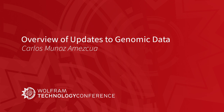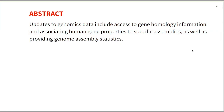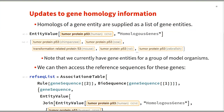Now I'll talk about the updates to genomics data. In summary, updates include access to gene homology information, associating human gene properties to specific assemblies, and providing genome assembly statistics. First, I'll talk about the updates to gene homology information.